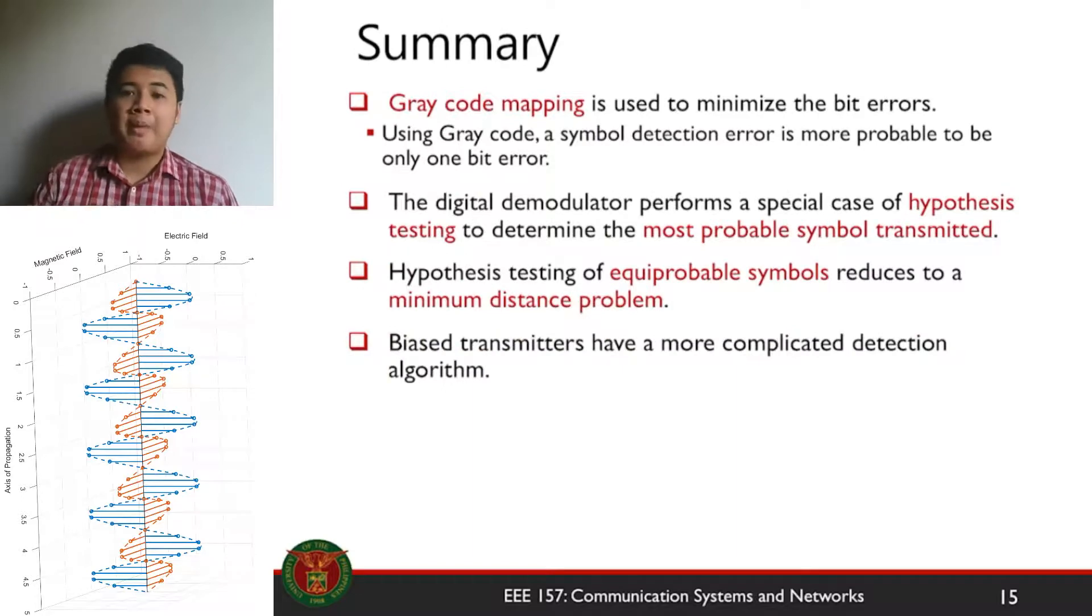Just to summarize: we use gray code mapping to minimize the bit errors when detecting symbols. Using gray code mapping, we will be able to use more powerful error correction techniques in higher layers of your communication system to further minimize the bit errors. The digital demodulator performs a special case of hypothesis testing to determine the most probable symbol transmitted. If you have equiprobable symbols, then your decision rule reduces to a minimum distance problem. There's actually a mathematical proof for this, but we won't dive that deep for this course. Finally, if we have biased transmitters, you'll have a more complicated detection algorithm, but you are sure that the decision boundary will be further from the biased symbol.